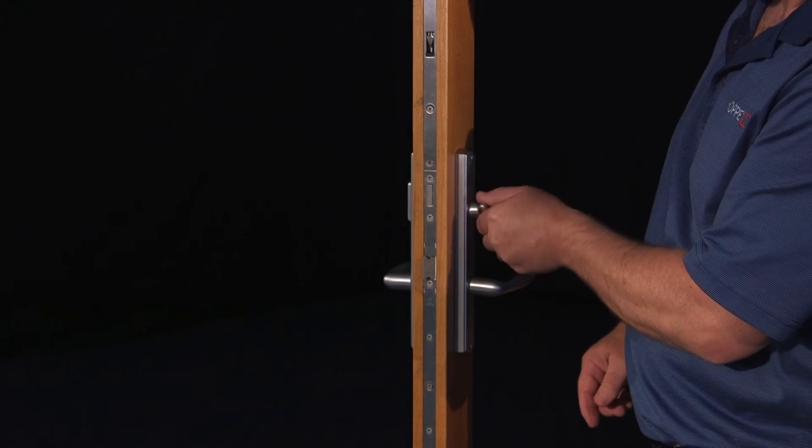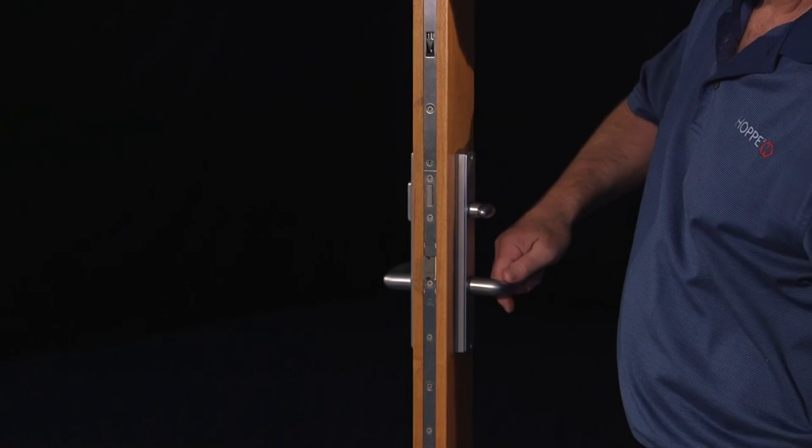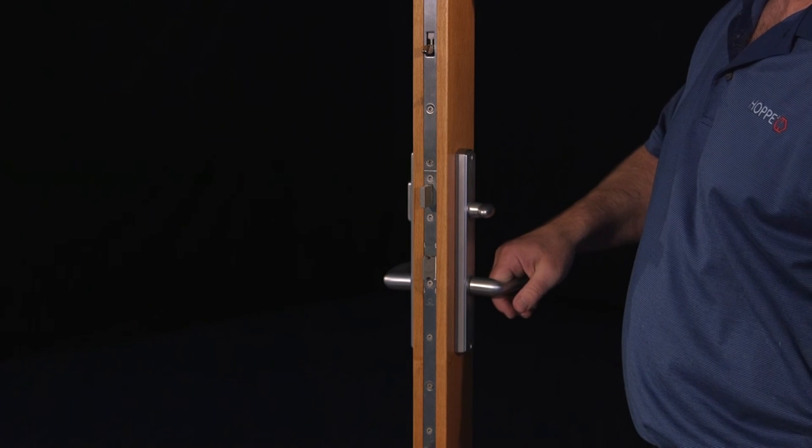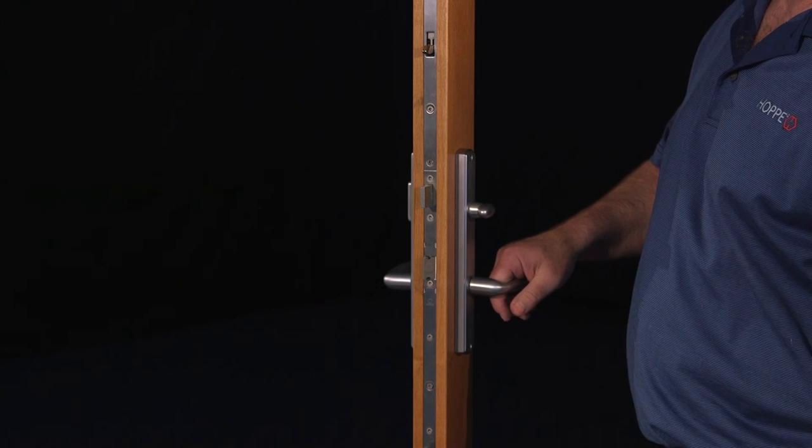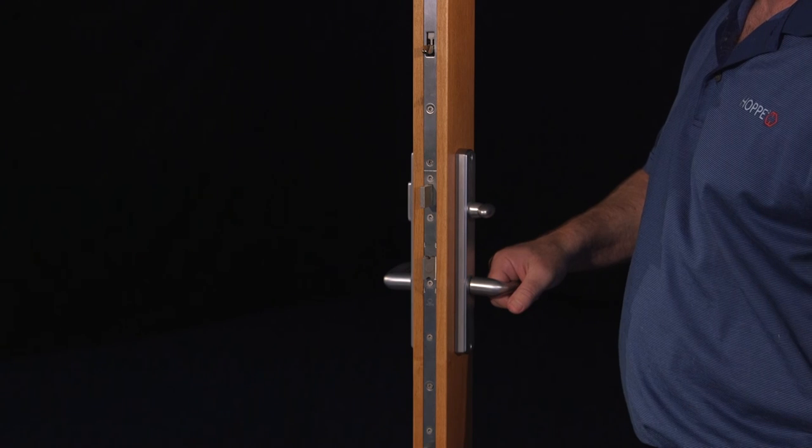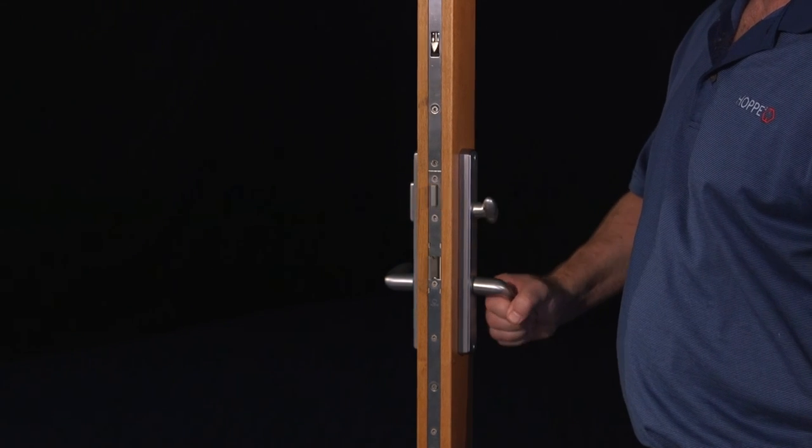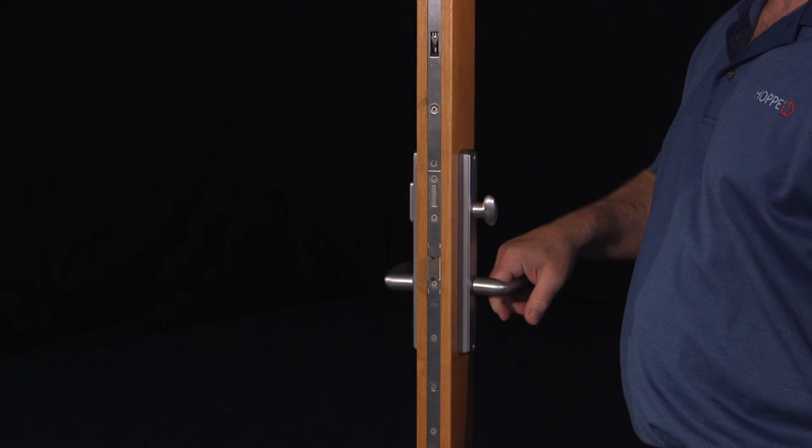Rotate the top of the thumb turn toward the edge of the door and then lift the inside handle. Lifting the handle at this point should initiate the locking points. Depressing the handle should retract all of the locking points.